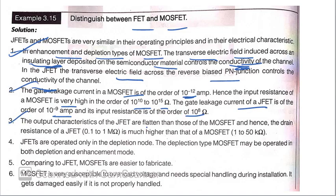Second is, the gate leakage current in a MOSFET is the order of 10 to the power minus 12 Ampere. Here, the input resistance or input impedance is very high in the order of 10 to the power 15 Ohm. Gate leakage current is around 10 to the power minus 9 Ampere and input resistance is 10 to the power 8 Ohm. Third part, the output characteristics of JFET are flattened than those of the MOSFET as compared to the MOSFET. And hence, the drain resistance of JFET is 0.1 to 1 Megaohm is much higher than the drain resistance of MOSFET that is 1 to 50 Kiloohm.